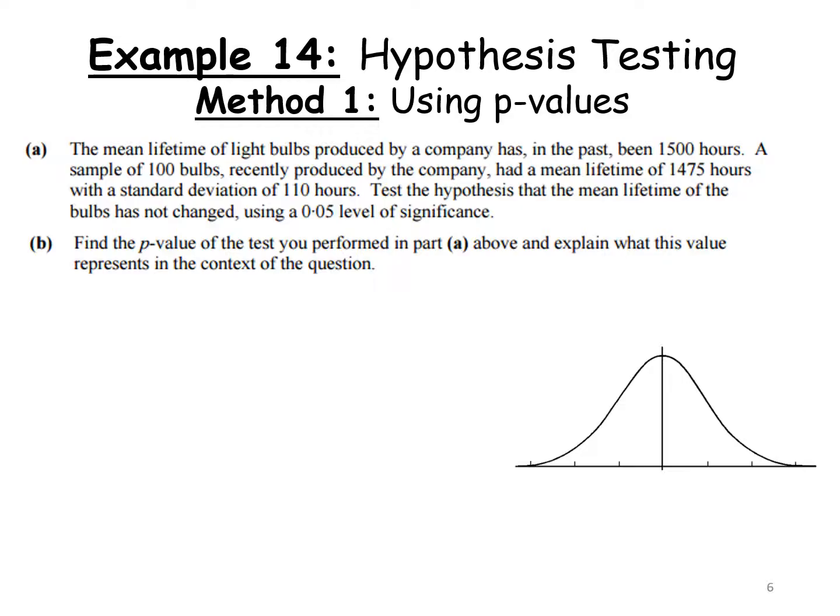The mean lifetime of light bulbs has in the past been 1500 hours, that's μ. A sample of 100, that's n, recently produced has a mean lifetime of 1475, that's x̄, with standard deviation 110. Test the hypothesis that the mean lifetime of the bulbs has not changed.